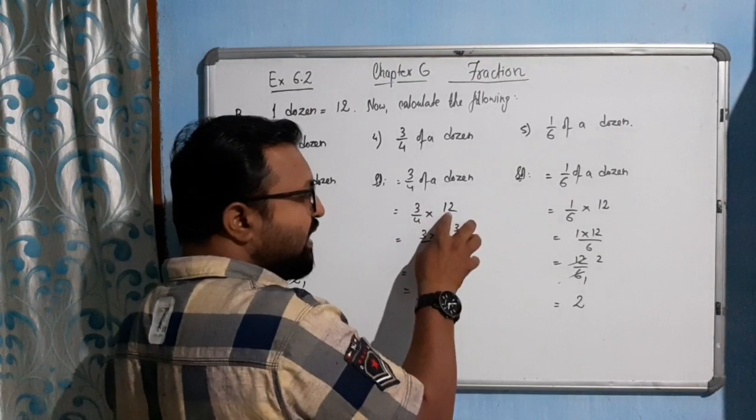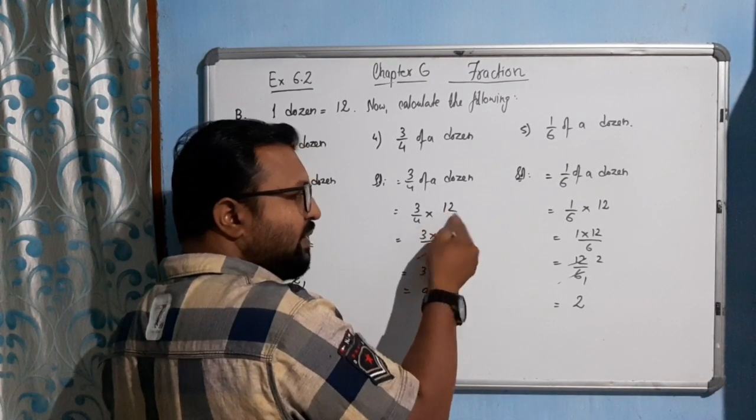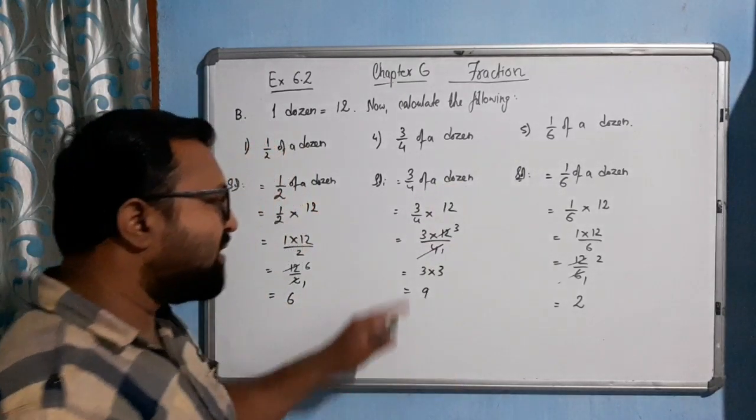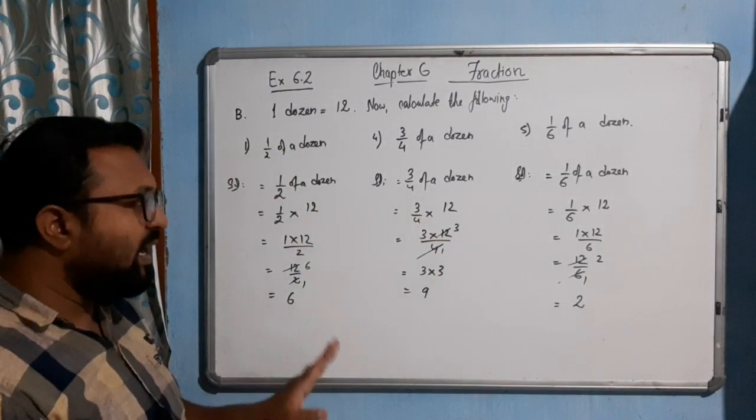So 2, 1, 2, in this way. Here also, 3 by 4 into 12 means what? This 12 is not multiplied by 4. This 12 is multiplied by 3. That's why I am writing 3 into 12 in the upper part of this line, in the numerator place, and 4 in the denominator place to make it clear.